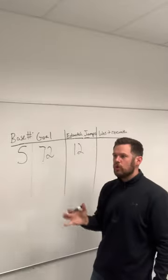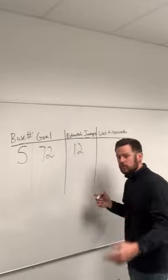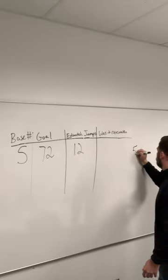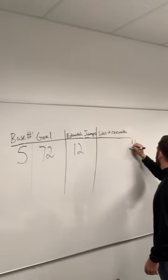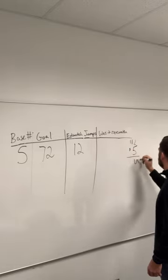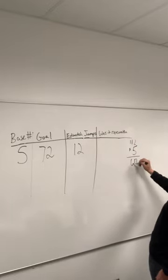So 5 times 12, we can do it on the board. Let's do 12 times 5, let's do it the right way. 5 times 2 is 10. 5 times 1 is 5. 5 times 1 is 5 plus 1 is 6. That's 60.